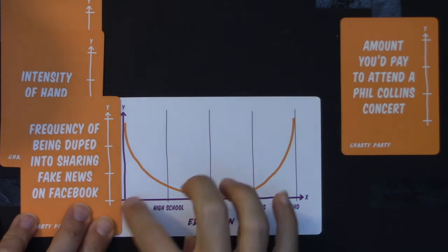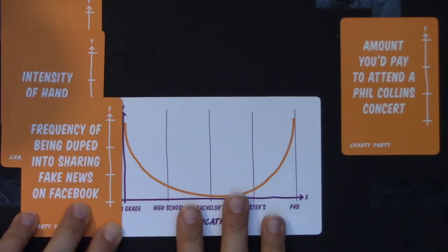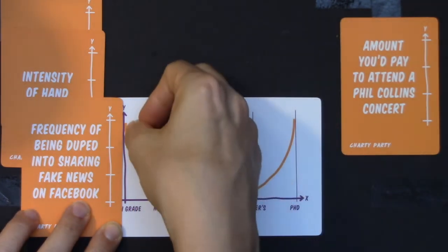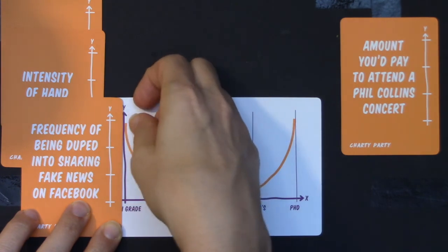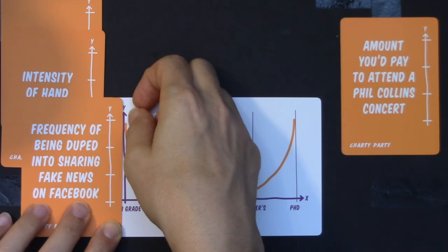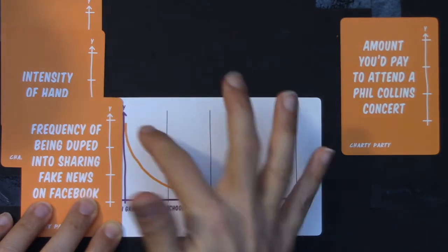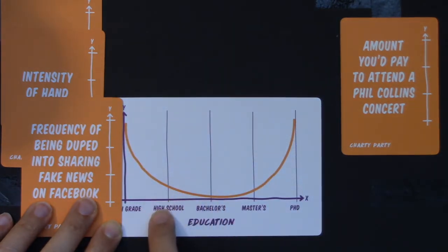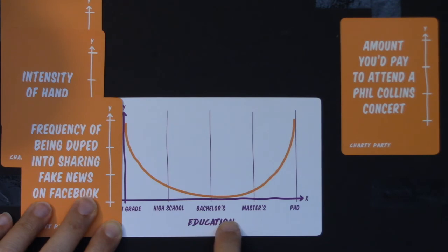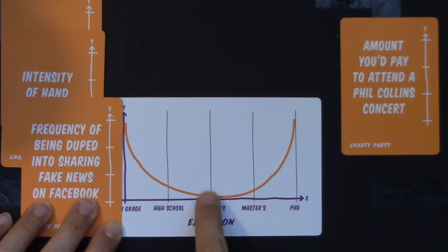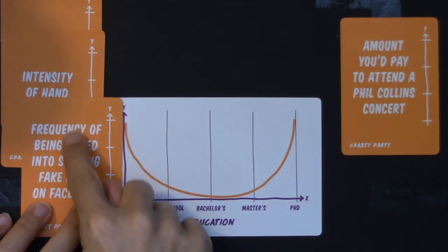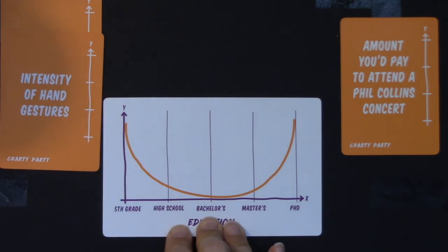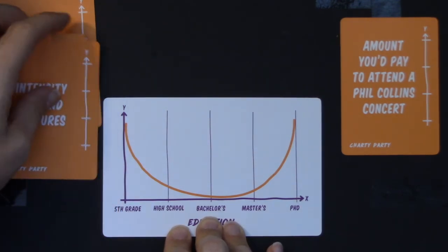Frequency of being duped into sharing fake news on Facebook — first of all, I don't know how many fifth graders are on Facebook. But I'd agree: if you're a fifth grader on Facebook you're probably susceptible to sharing fake news because you don't know what's true yet. By high school you'd hopefully check sources, and definitely with a bachelor's degree I like that this is heading down. What's unfortunate, given this U-shape, is that once you get educated past a bachelor's, you start becoming susceptible again to sharing fake news. I'd be sad if this chart matched this y-axis. I still think intensity of hand gestures is my favorite.